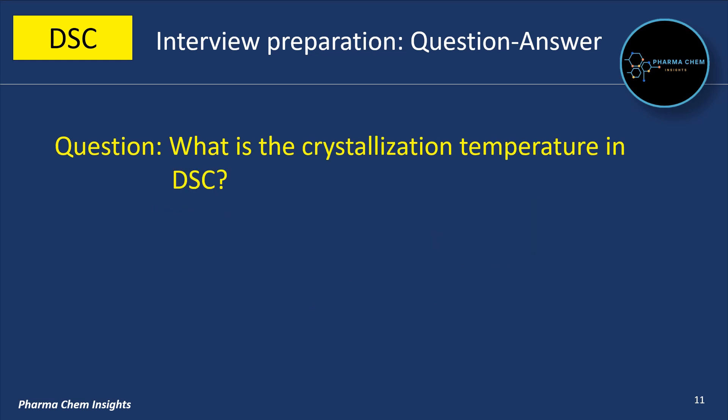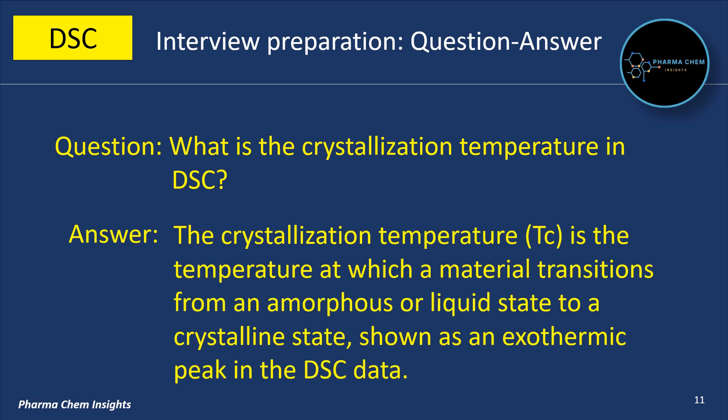Next question: What is the crystallization temperature in DSC? The crystallization temperature (Tc) is the temperature at which a material transitions from an amorphous or liquid state to a crystalline state, shown as an exothermic peak in the DSC data.